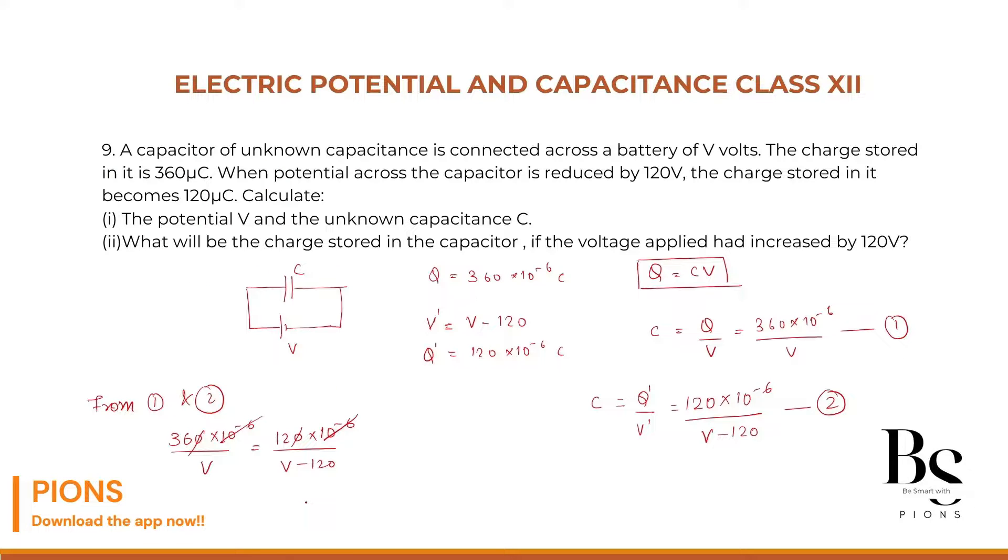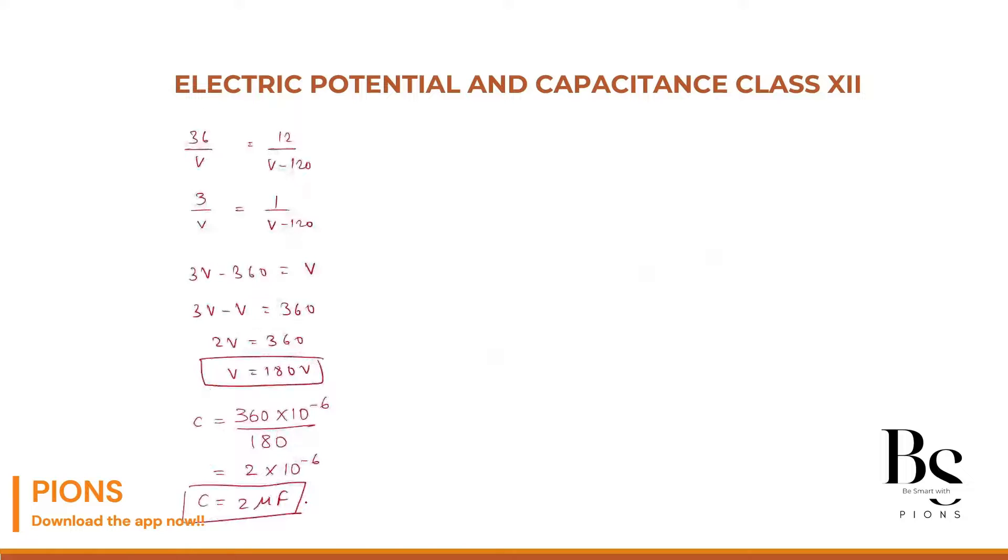Let's move to the second part. What will be the charge stored in the capacitor if the voltage applied had increased by 120V? Let's do the second part over here. What is our initial voltage? 180 volt. We have just now found it. What's the new voltage? V dash, that will be 180 plus 120. What's the new voltage? 200 volt. If the new voltage is 200 volt, what will be the new charge? New charge Q dash will equal C into V dash. Correct?